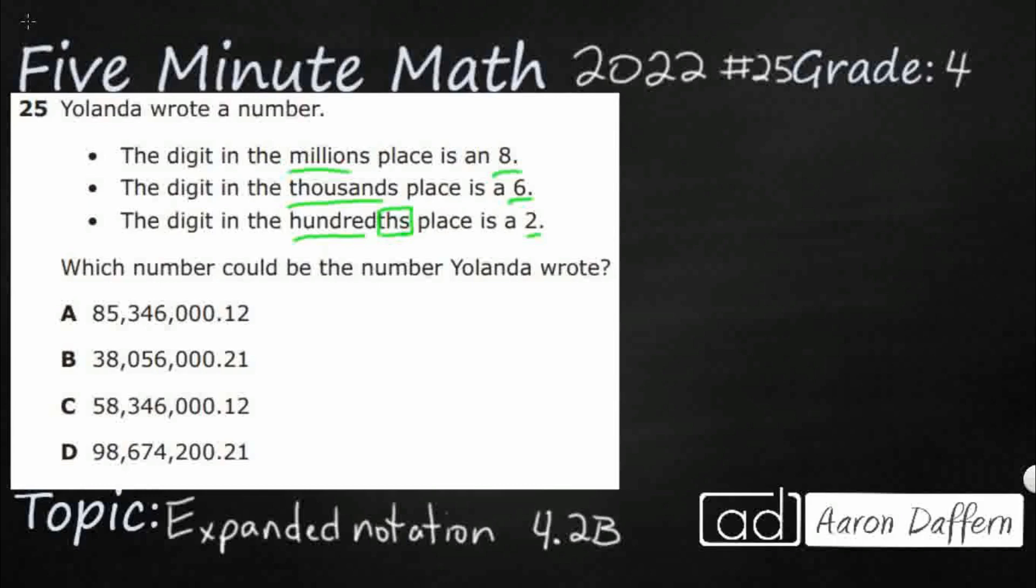So let's make a place value chart here. I'm going to need to go all the way to the hundredths. I'm going to put my decimal right there and make sure I've got enough room. All right, so I've got ones, tens, hundreds.